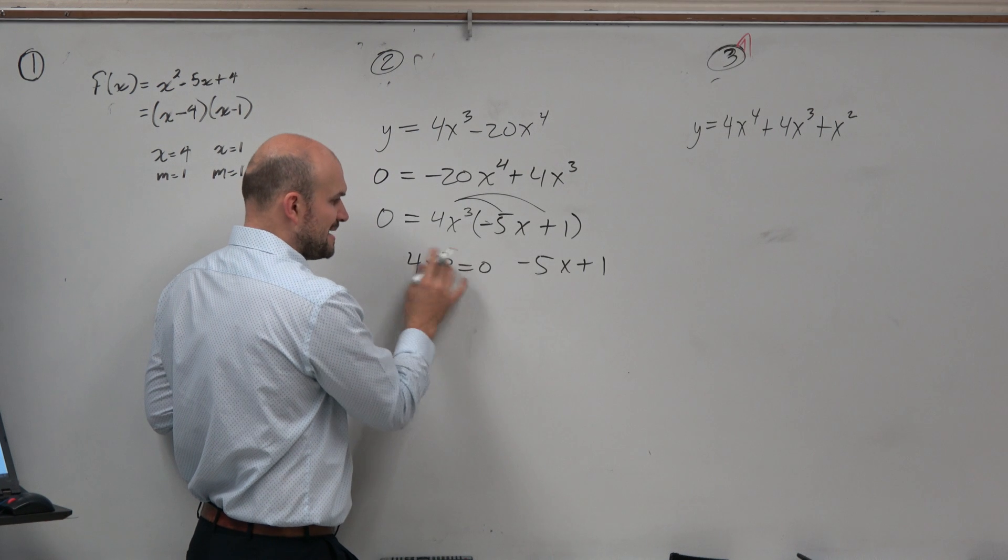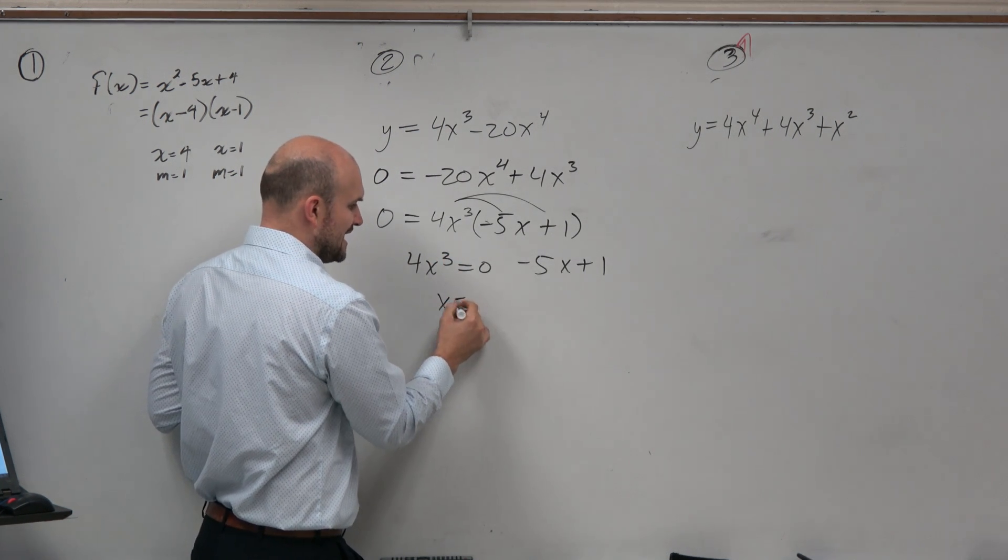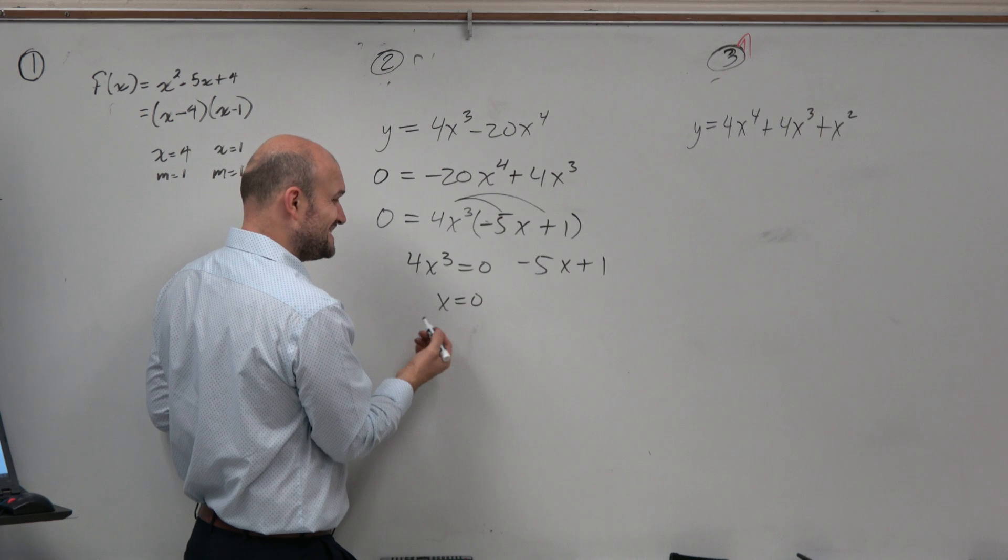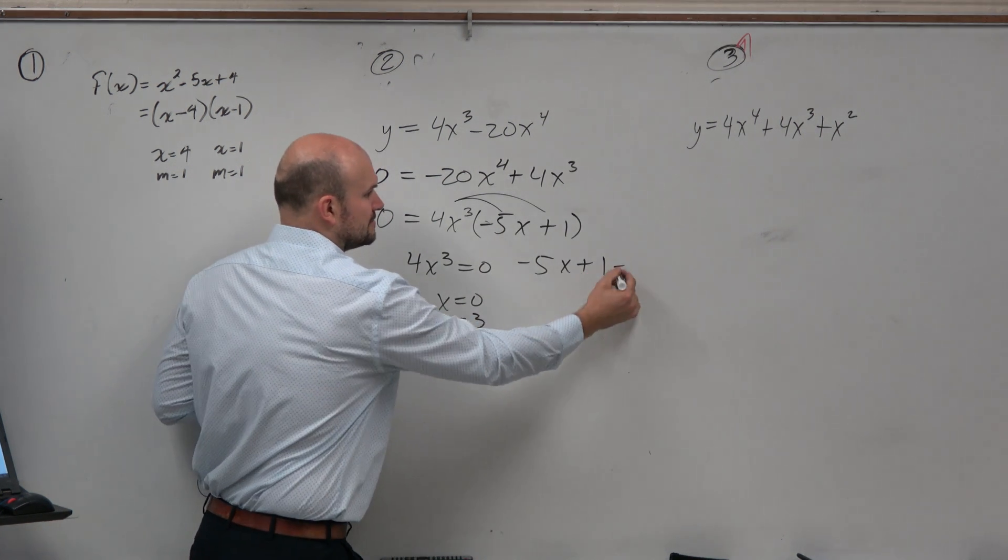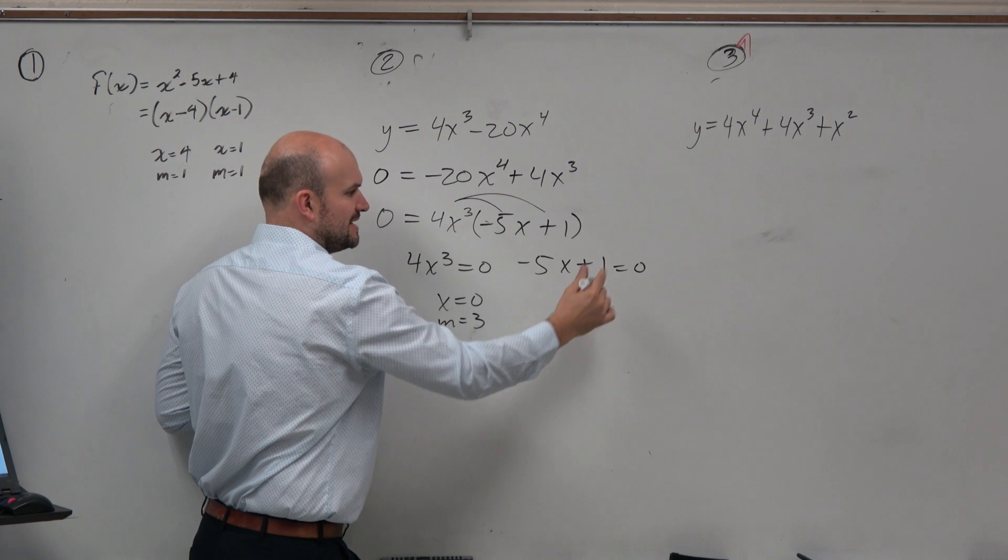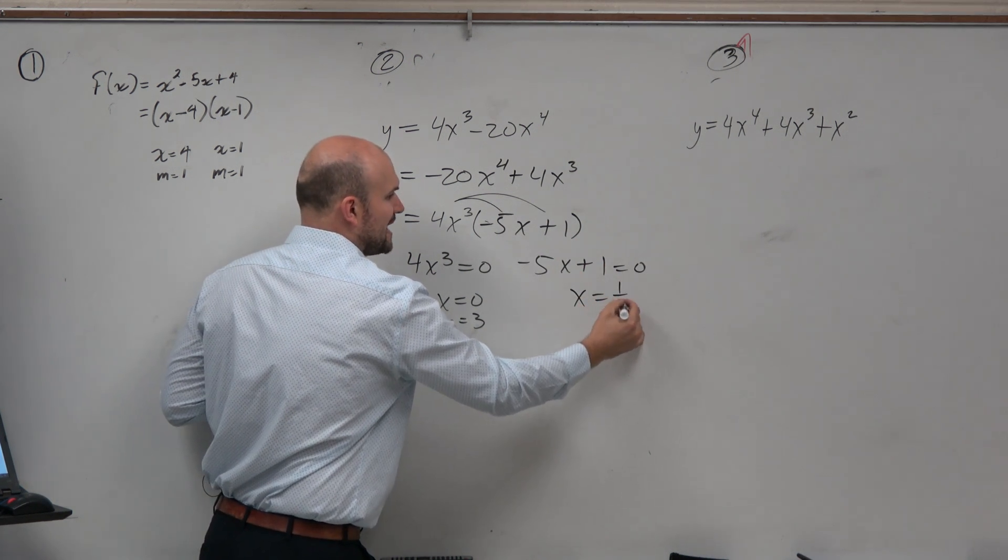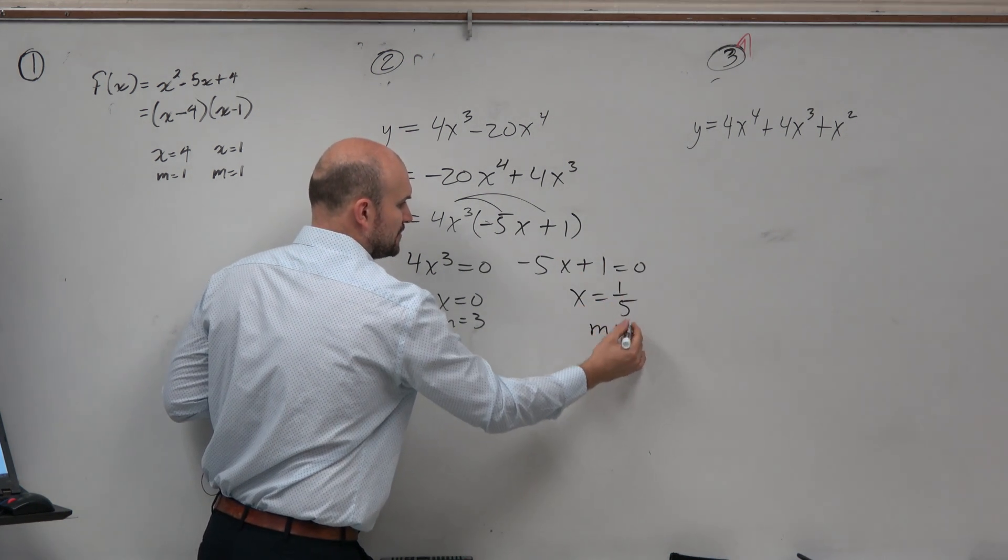So therefore, if I use my inverse operations, divide by 4, take the cube root, I would get x is equal to 0 with a multiplicity of 3. Here, subtract 1, divide by negative 5, x is going to equal a positive 1 fifth with a multiplicity equal to 1.